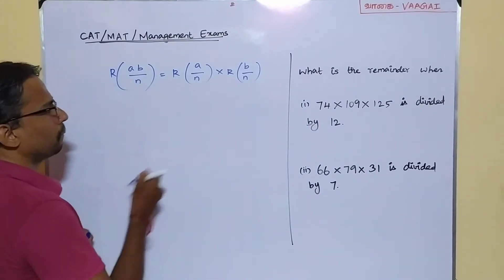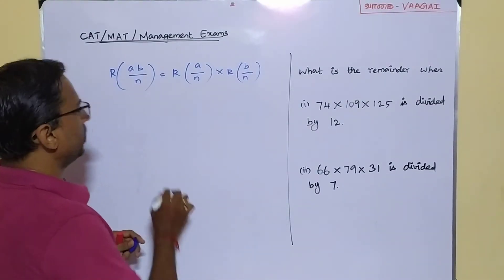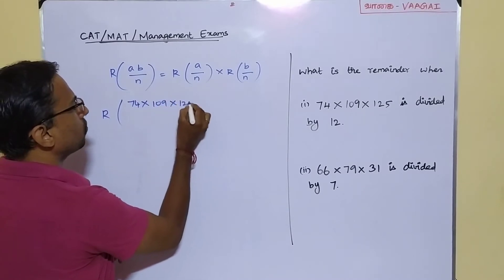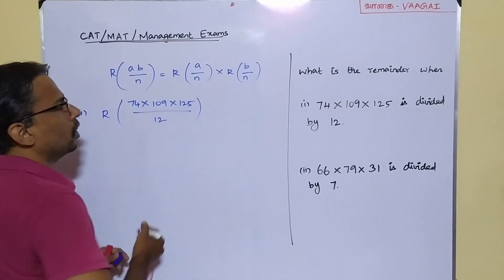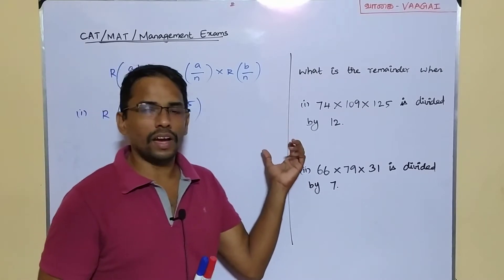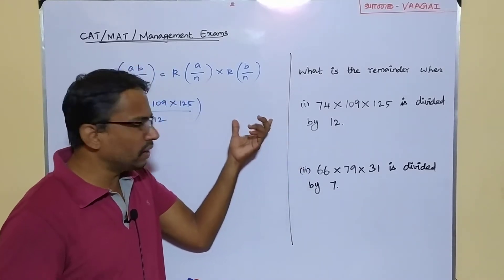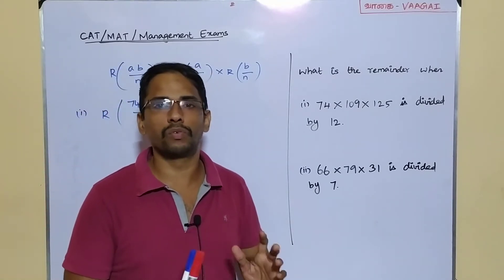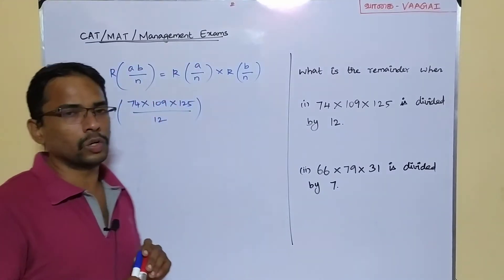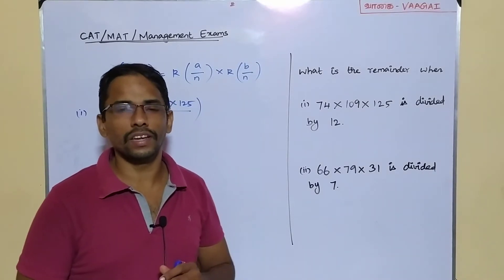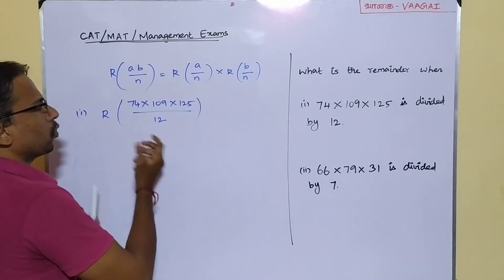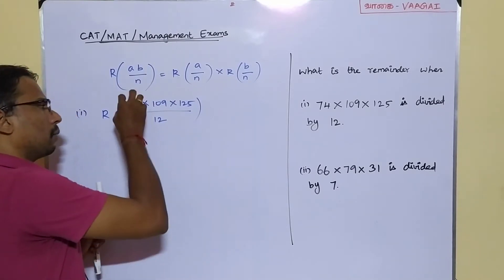Let's solve the first question: what is the remainder when the product 74×109×125 is divided by 12? Just imagine finding this huge product and then dividing that very large number by 12 to get the remainder — that would be a very big, time-consuming process. Instead, we can use this property to solve the problem very easily.